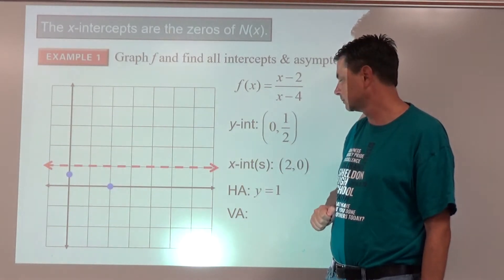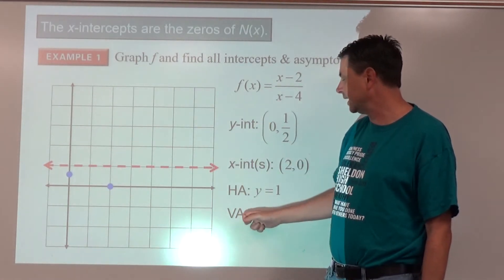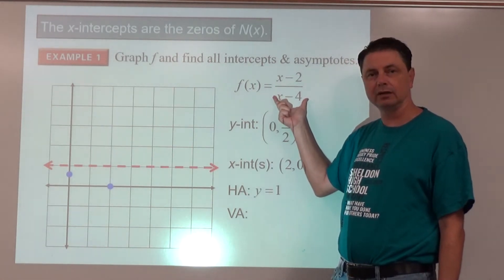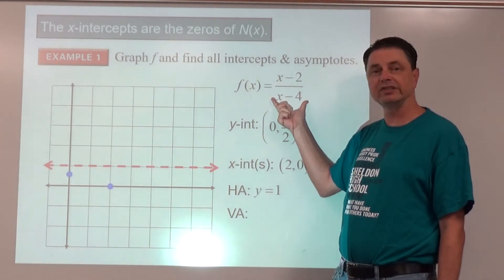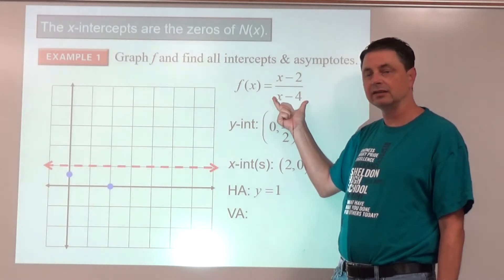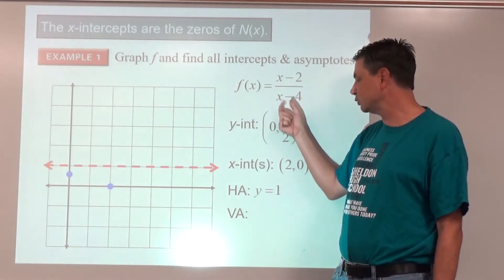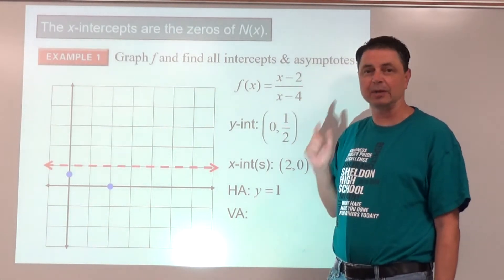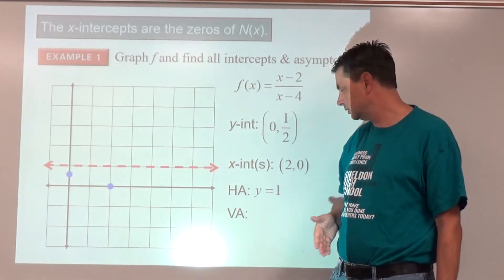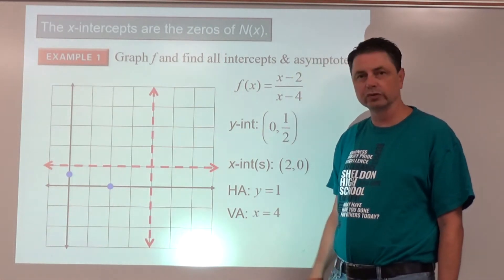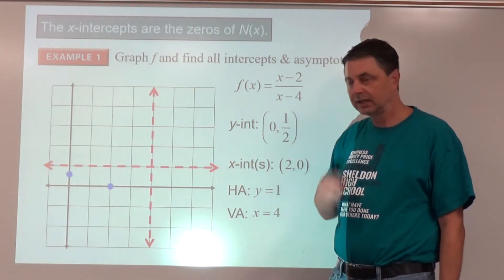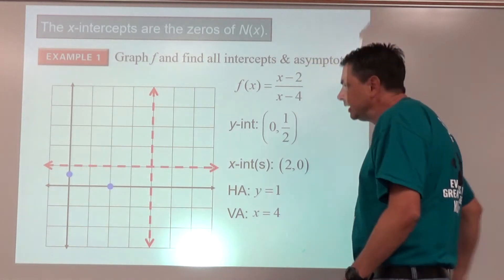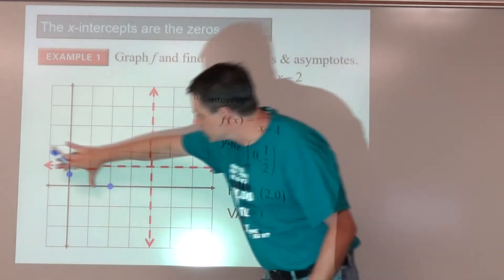I'm putting a dotted line to show it's not really part of my graph — it's just helping us out. Lastly, vertical asymptotes come from the denominator. Set the denominator equal to zero, solve for x, and get x equals 4. That is the vertical asymptote — it's not a point, it is a vertical line at x equals 4.